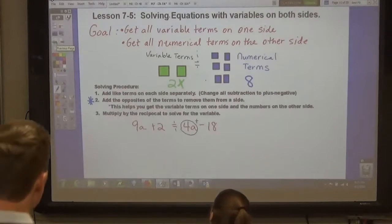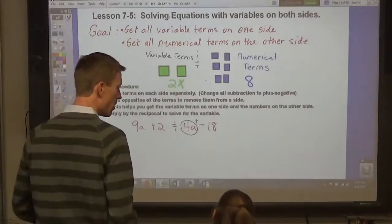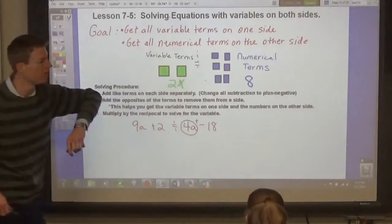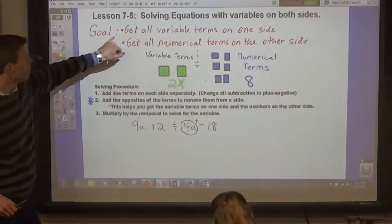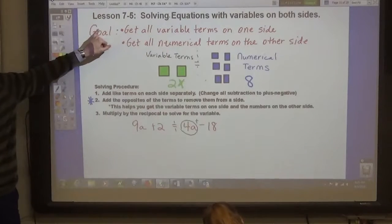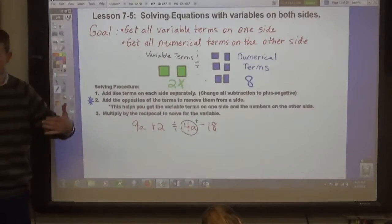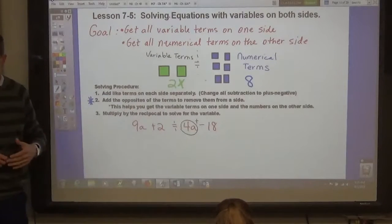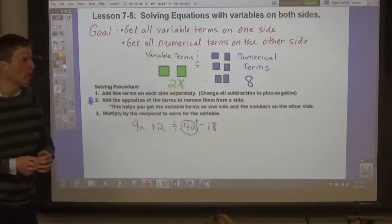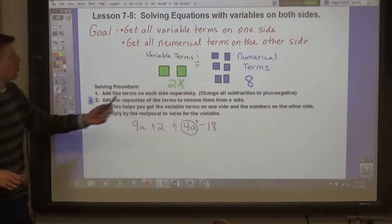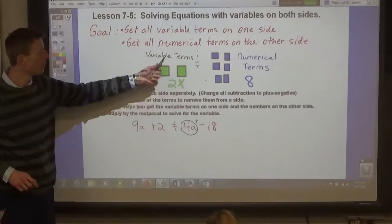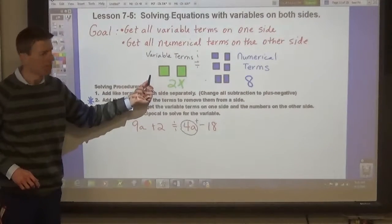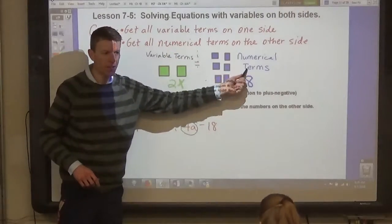So, in Lesson 7-5, we're going to be working with equations that have variables on both sides of the equation. And we know what our goal is. We know the goal is to get the variable by itself. So it says x equals a number, or whatever, y equals a number, n equals a number. But in order to do that, you have to get the variable terms on one side and the numerical terms on the other side.